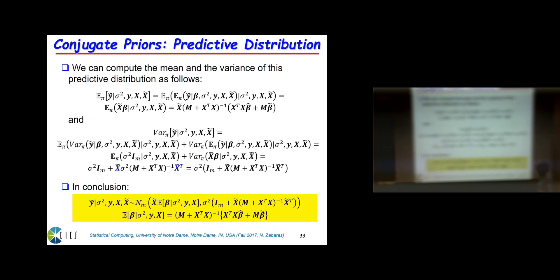The conditional predictive distribution given sigma squared is a Gaussian of dimension M (the number of test points) with this mean and covariance. Now we need to integrate sigma squared out. The marginal posterior of sigma squared is the inverse gamma distribution derived earlier, so we integrate this Gaussian over that inverse gamma — summing infinitely many Gaussians with different variances sigma squared.